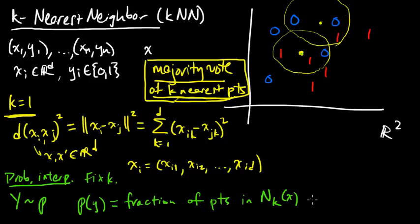The fraction of points in Nk(x) with class, so fraction of points xi such that yi, the corresponding y for that xi, takes the value y. So it's the fraction of points for which these nearest neighbors take the value y. Their label is y, their class is y. Here, Nk(x) is these are the k nearest points to x.